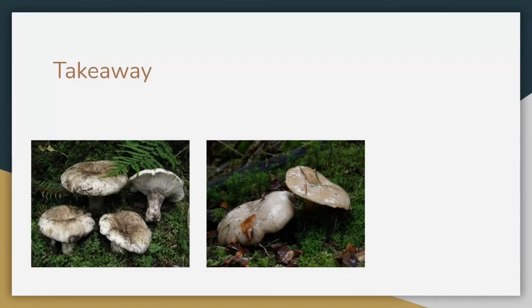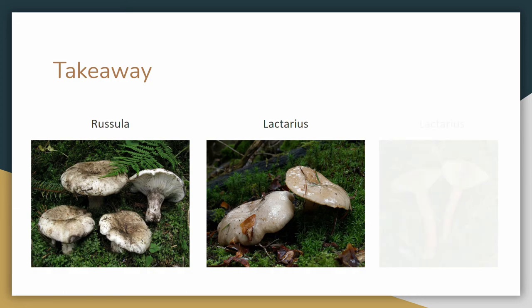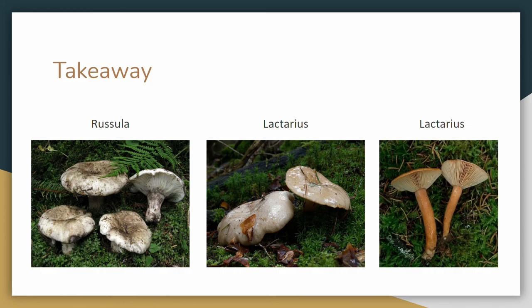To finish up our presentation, we'd like to present one of our takeaways. Through the analysis of our data, we have found that mushroom species in separate genera can have significant similarities. Furthermore, there is no guarantee that the shape of all species within any one genus is the same. If we were to improve this model in the future, we would switch to a species classification approach instead of organizing a collection of species under one genus. This would allow for a more direct correlation between the appearance of the input image and the class.